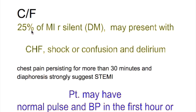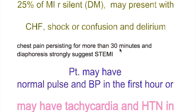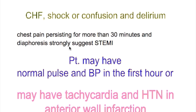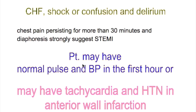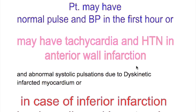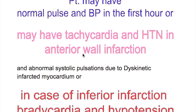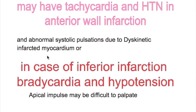25% of MIs are silent, as occurs in diabetes — with no pain, only shock, confusion, delirium, or congestive heart failure. Chest pain persisting for more than 30 minutes and diaphoresis strongly suggest STEMI. The patient may have normal pulse and blood pressure in the first hour. In anterior wall infarction, there are features of sympathetic nervous system activity: tachycardia, hypertension, and abnormal systolic pulsation due to dyskinetic infarcted myocardium.